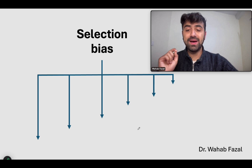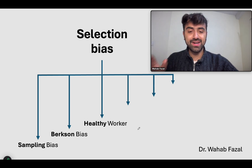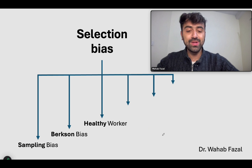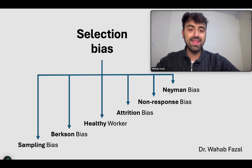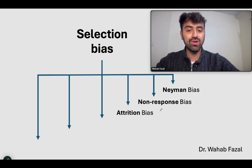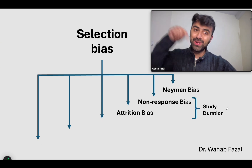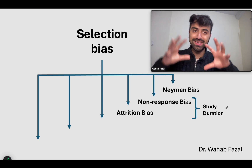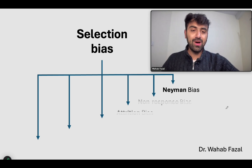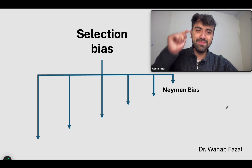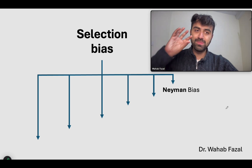Let's take a look at our selection bias chart again. The first three biases occur during the choosing phase: sampling bias for the general issue; Berkson — Berkson General Hospital; and healthy workers are generally not always the right fit for the general population. Then we studied attrition or migration — people left — and non-response — people don't respond to surveys. These happen during the study duration. Selection bias can even occur during that phase, not just at the choosing stage.